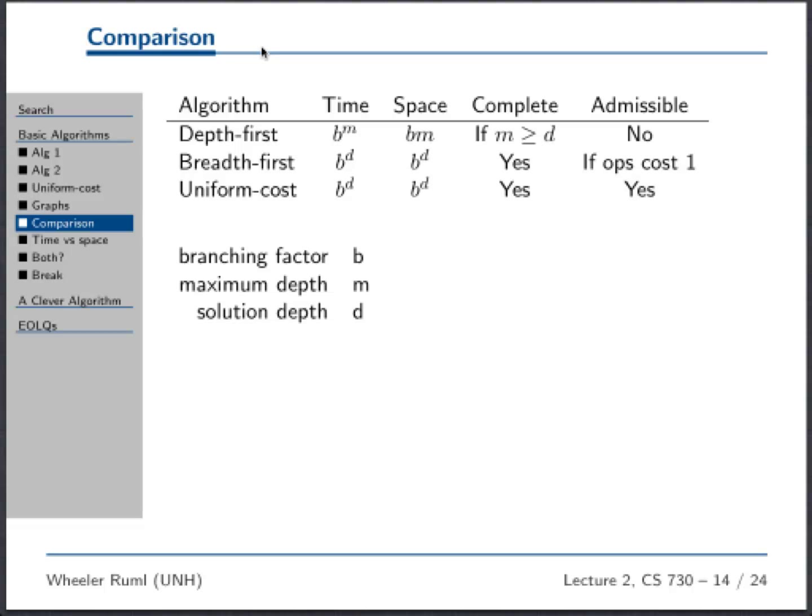So uniform cost search, very nice algorithm, highly recommended. It's admissible, it's complete, but it does have this ouchiness associated with it right here.